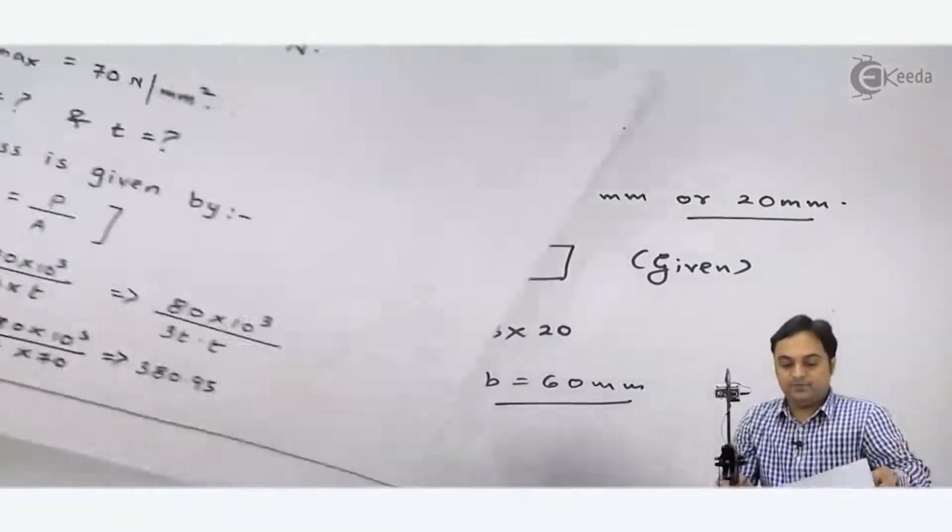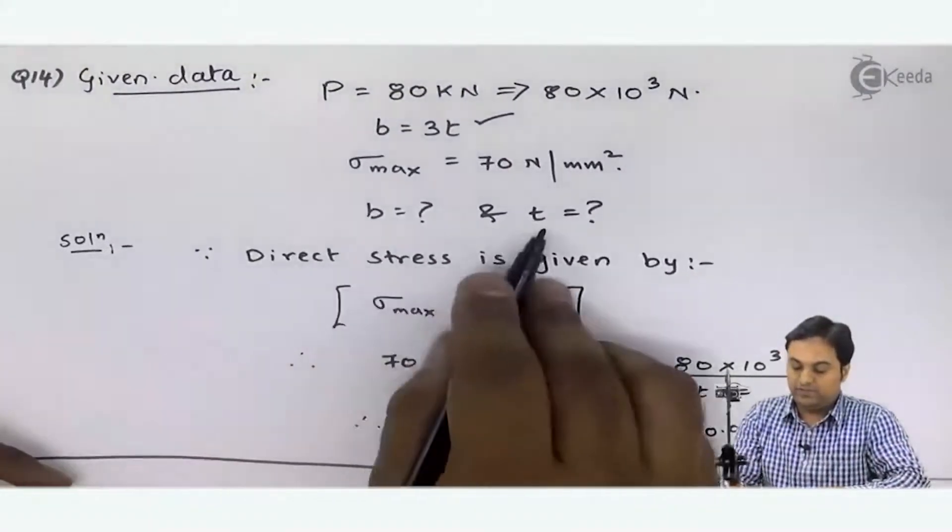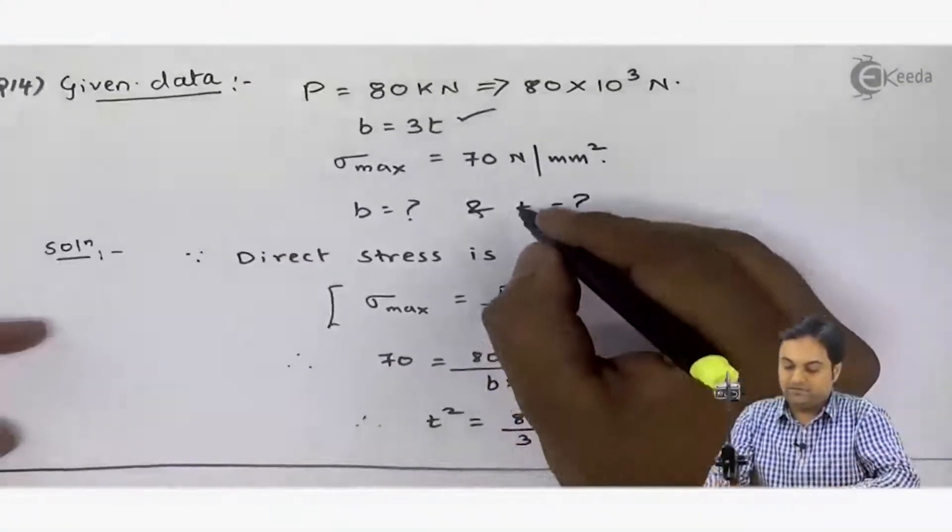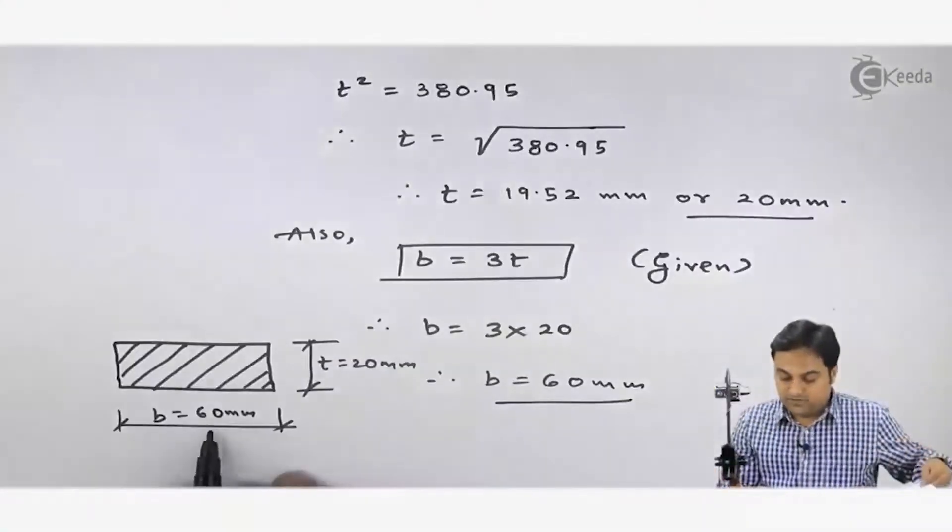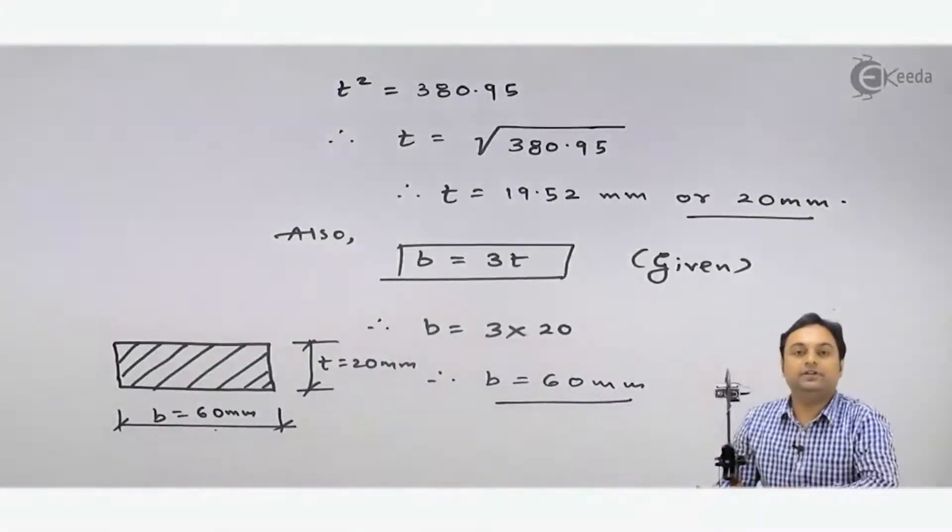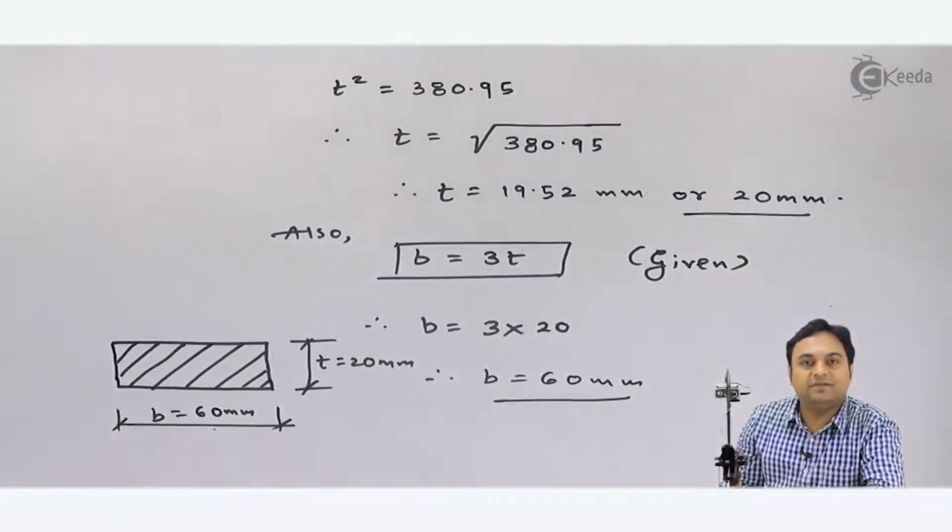This is our question. Here we are asked to calculate width and thickness. Thickness answer is 20 mm, which we have solved. Width answer is 60 mm, which we have completed. So with this, we have completed 14 problems on direct and bending stresses.